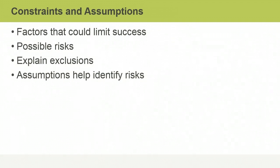As well as defining product acceptance criteria, the scope statement should identify project constraints. These include any factors that could limit the success of the project or pose possible risks. Describing constraints often helps make it clear why certain scope exclusions were made, making it more likely that stakeholders will understand and agree to the scope statement.